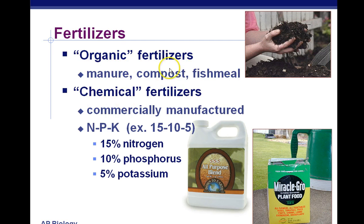Compost consists of dead plants that have been broken down. Chemical fertilizers are commercially produced using the Haber process. About 40% of our crops are the result of this commercially produced fertilizer. The Haber process makes nitrogen, phosphorus, and potassium — specifically nitrogen in the form of nitrates.